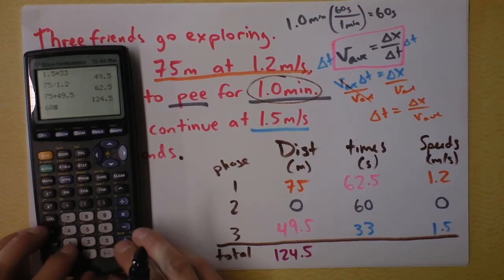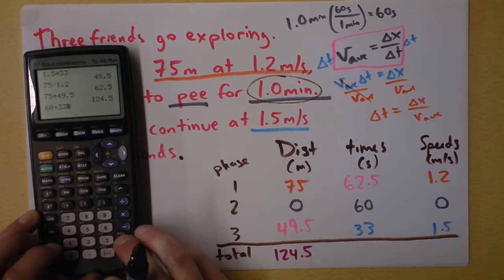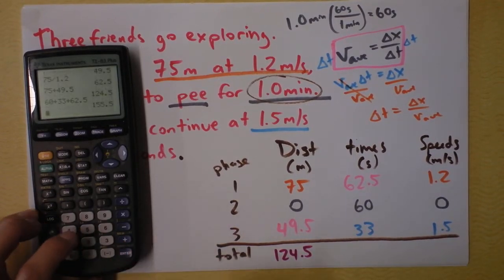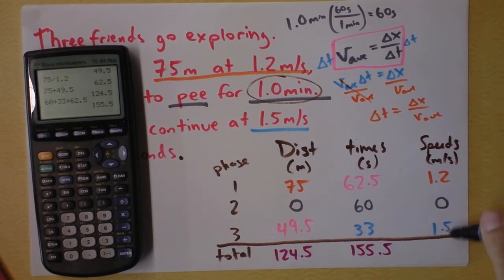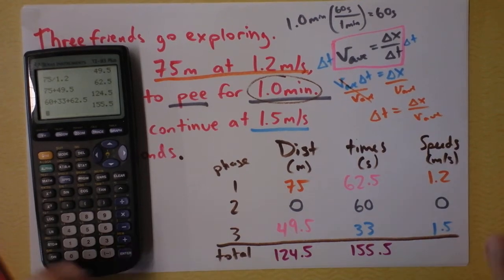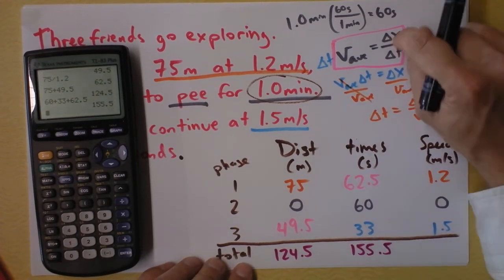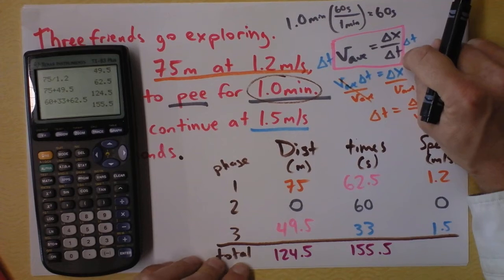And the total time will be 60 plus 33 plus 62.5. That's 155.5. And I don't add up the speeds because that doesn't mean anything. I'm interested in the total distance traveled and the total time that it took.